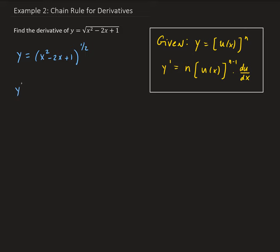Taking the derivative dy/dx, we bring down the 1/2, giving us 1/2 times x squared minus 2x plus 1. Subtracting 1 from 1/2 leaves us with a negative 1/2 power. Then we take the derivative of the inside part.